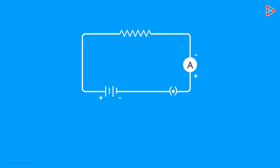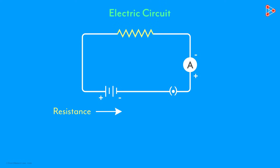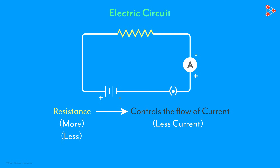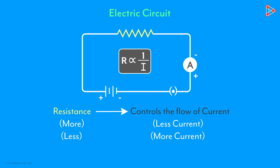Do you remember what resistance is in an electric circuit? It is something that controls the flow of current. If it's more, then the current reading will be lower. And if it's less, then the current reading will be higher. It's inversely proportional to the current.